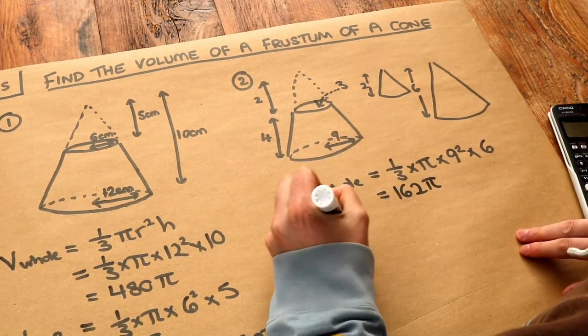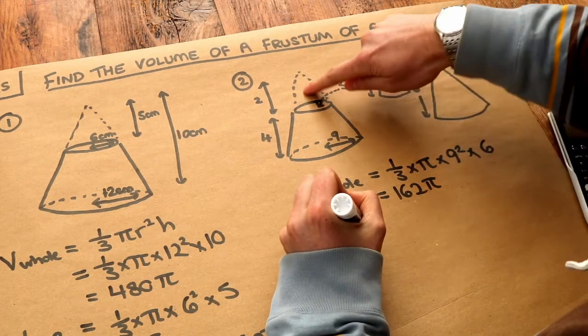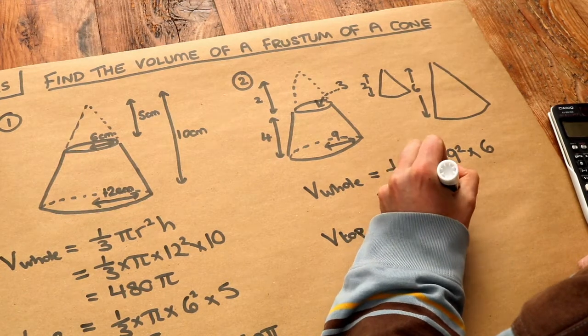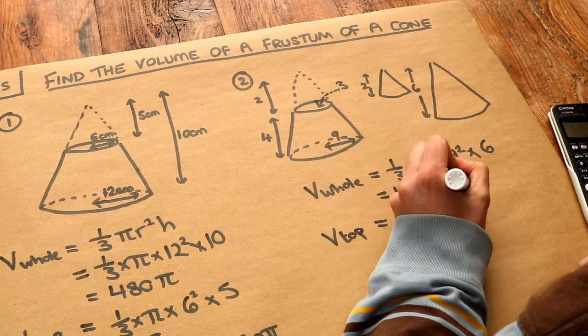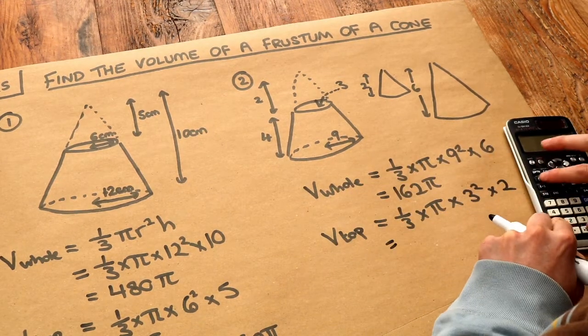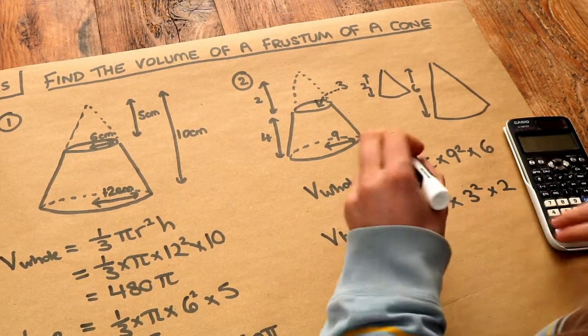And then the volume of the top cone, this sort of imaginary cone that's not actually there, one-third times pi times the radius squared, so 3 squared, times by the height, which is 2. And again, if we simplify that on our calculator, is 6 pi.